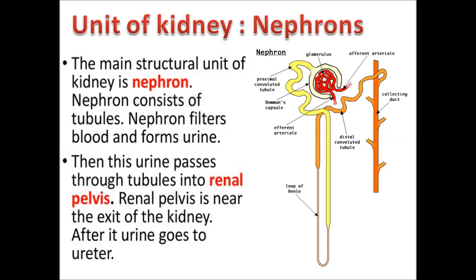Now we will talk about the unit of the kidney — the nephron. The main structural and functional unit of the kidney is the nephron. The nephron consists of tubules, filters blood and forms urine. The urine then passes through tubules into the renal pelvis, and then goes to the ureter. The nephron consists of different structures: the glomerulus, proximal convoluted tubule, Bowman's capsule, efferent arteriole, afferent arteriole, distal convoluted tubule, loop of Henle and collecting tubule.